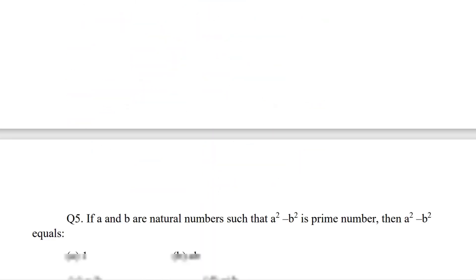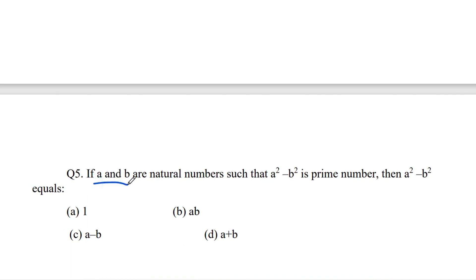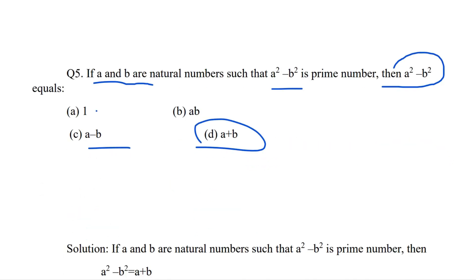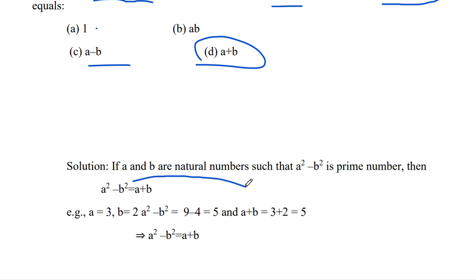The next question: if a and b are natural numbers such that a² - b² is a prime number, find the value of a² - b². The options are: 1, a, b, a-b, or a+b. Since a² - b² = (a+b)(a-b), for this to be prime one factor must be 1. Choosing a = 3 and b = 2 gives a² - b² = 5, which is prime, and a + b = 5. Therefore a² - b² equals a + b. Thank you.